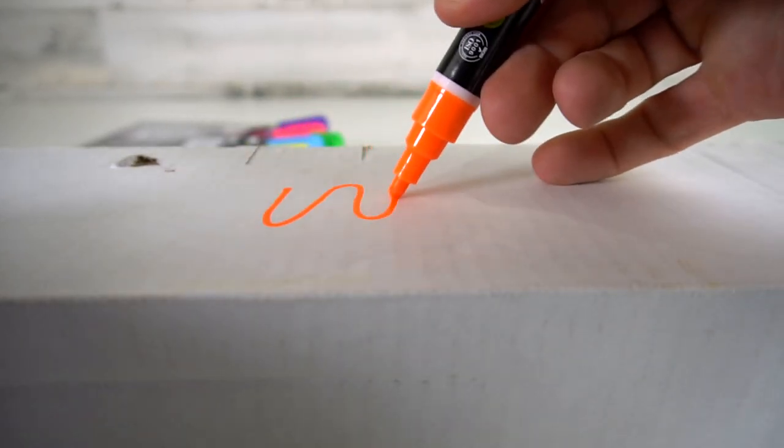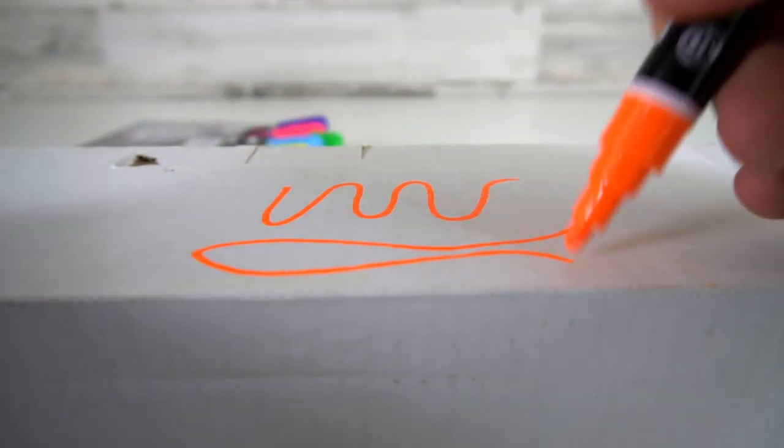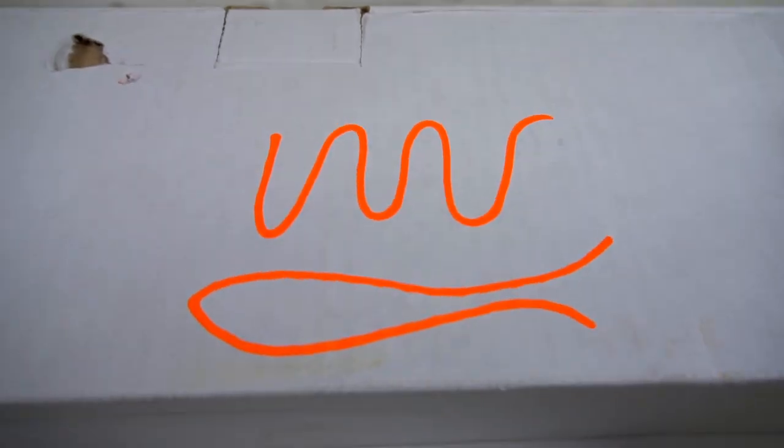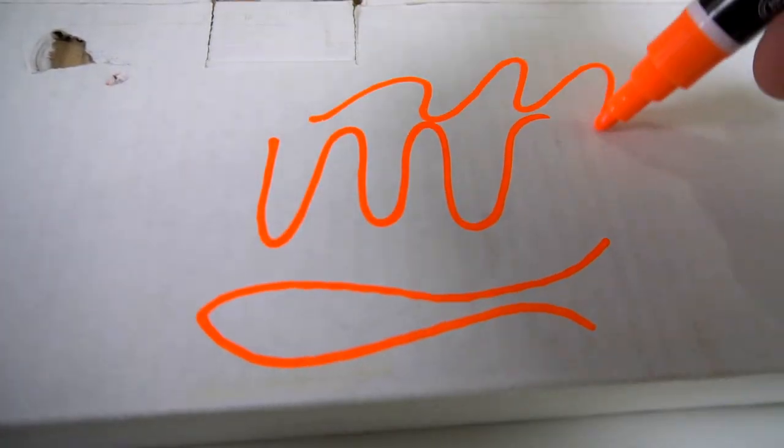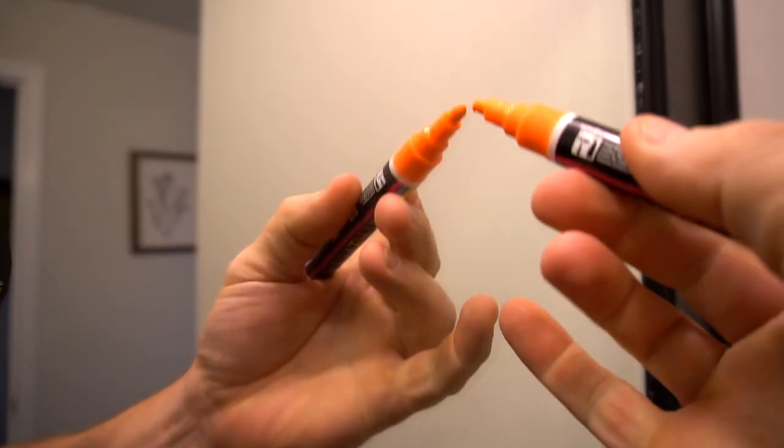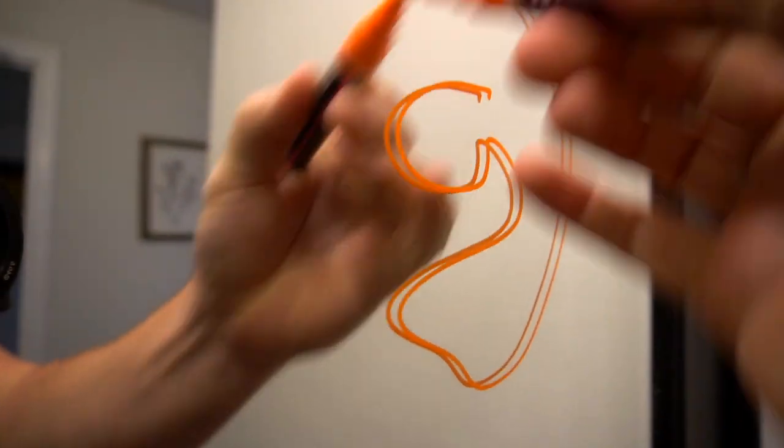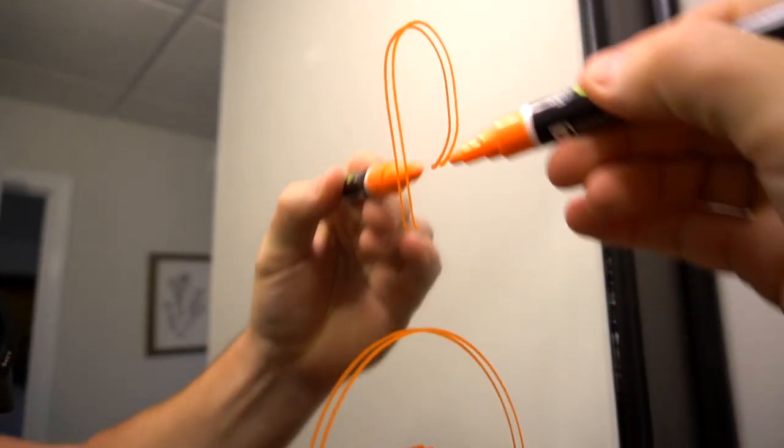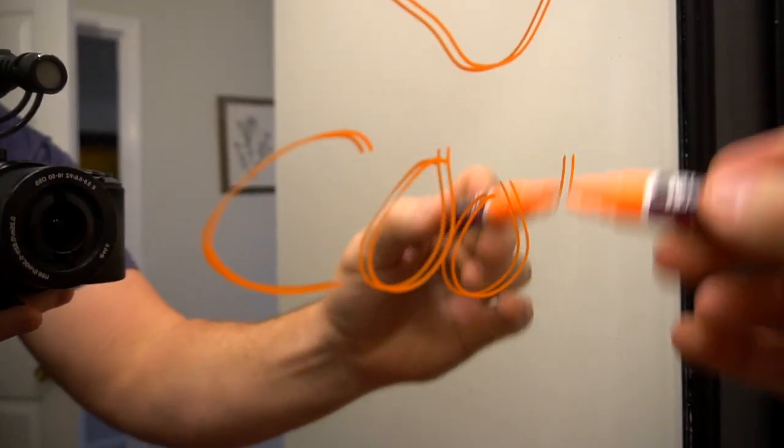First up is cardboard, and it's very nice. It writes really awesome. Does it write on glass? Oh yeah, it does. Writes really well.